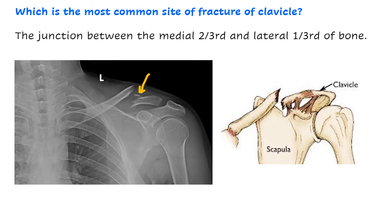The most common site of fracture of clavicle is at the junction of the medial two-thirds and lateral one-third, where there is maximum curvature making it a weak point. This can be seen on X-ray as well.